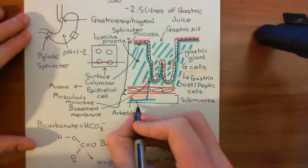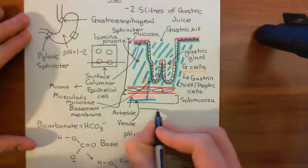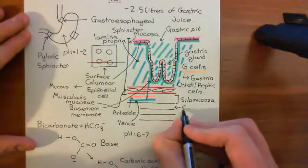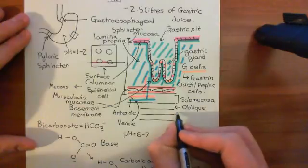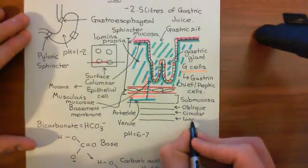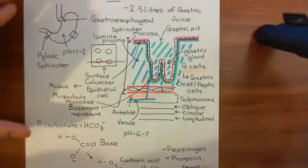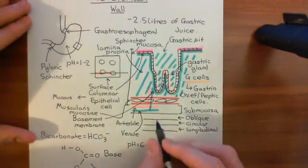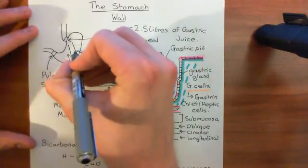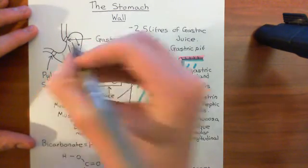Underneath the submucosa, we now have three layers of smooth muscle. The first is what's known as the oblique layer of smooth muscle. The second is called the circular layer of smooth muscle. And the third is called the longitudinal layer of smooth muscle cells. The difference between the three is the orientation of the smooth muscle cells. In the oblique layer, the smooth muscle cells will be oriented on the stomach in an oblique direction.